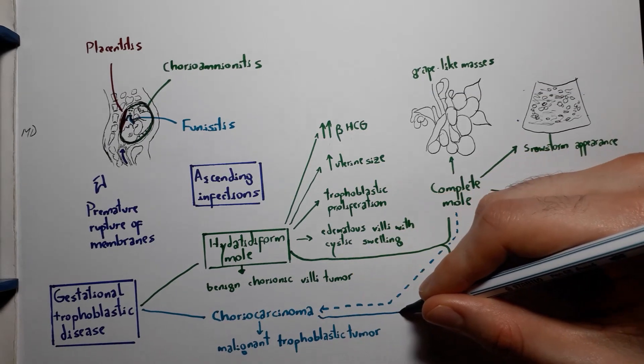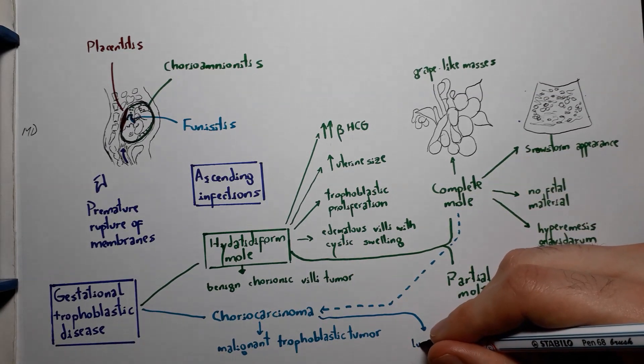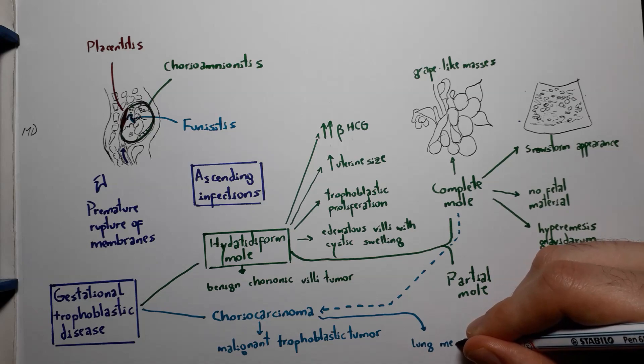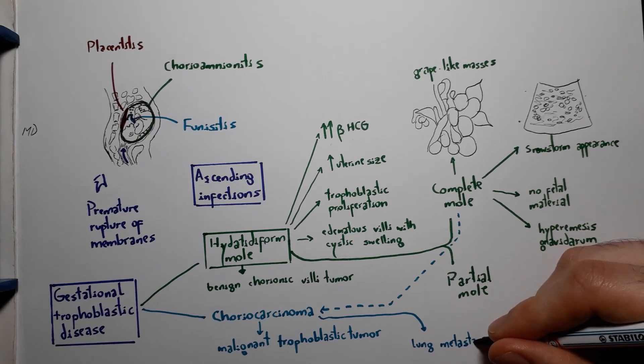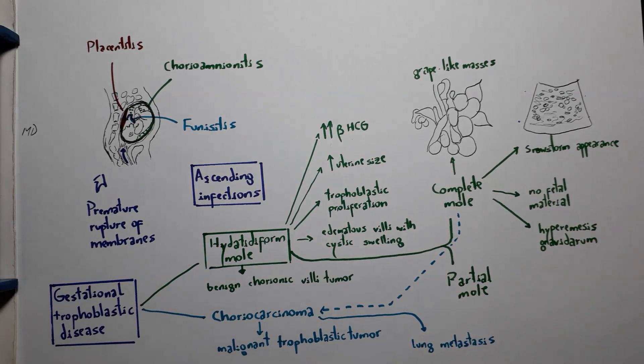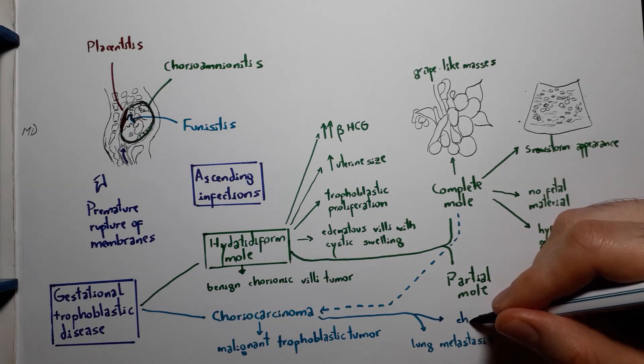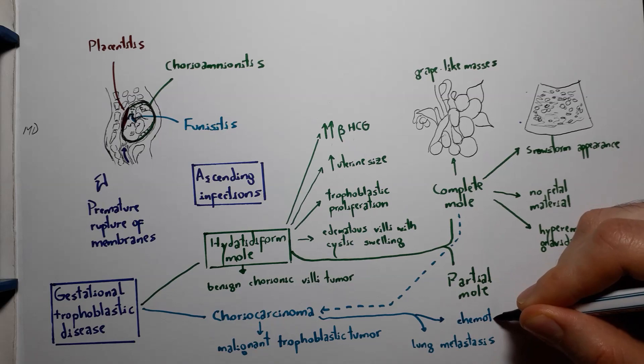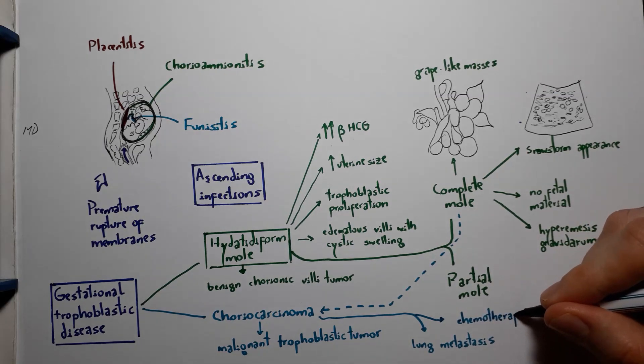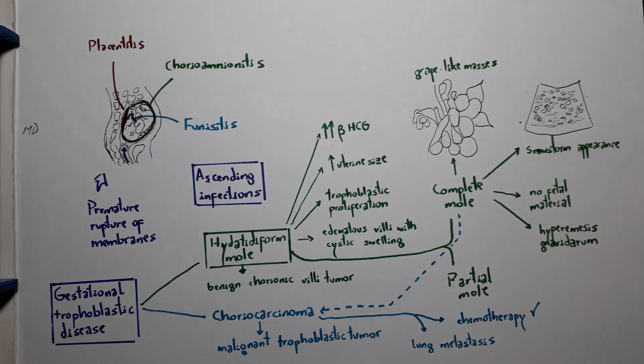Choriocarcinoma has a high risk of metastasis, especially to the lungs. However, it responds well to chemotherapy with methotrexate when it originates from hydatidiform mole. This does not apply for those choriocarcinoma cases that are not associated with gestational disease.